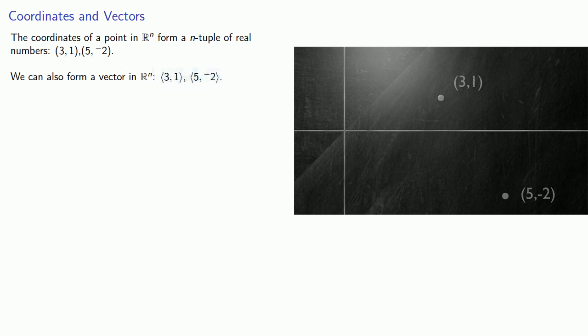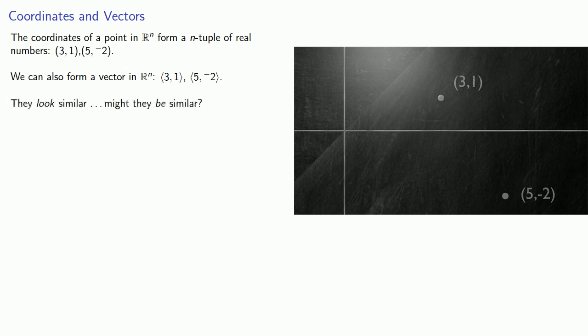These things look similar — might they be similar? We might proceed as follows. The coordinates of a point tell you how to get to the point from the origin. So to get to a given point, I need to go 3 units over and 1 unit up, or go down 2 units and then 5 units to the right.